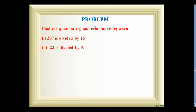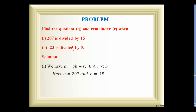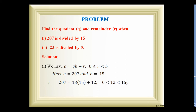We will see some problems under the division algorithm. Find the quotient q and remainder r when 207 is divided by 15. We have a = bq + r, with the condition that r lies between 0 and b. Here a = 207 and b = 15. Dividing manually: 207 = 15 × 13 + 12, and 12 lies between 0 and 15. Therefore q = 13 and r = 12.